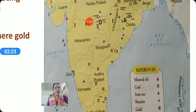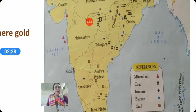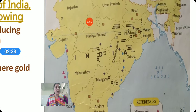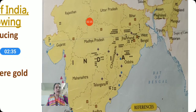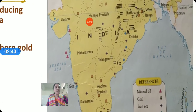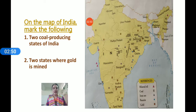Now you can see that the four-dot symbol appears in several states: Tamil Nadu, Andhra Pradesh, Odisha, Chhattisgarh, Madhya Pradesh, Jharkhand, and Meghalaya. These are all the states where coal is produced. However, you have to mark it in only two states, and write the name 'coal' on the side.